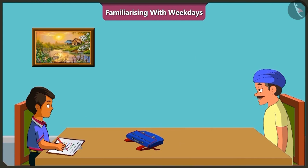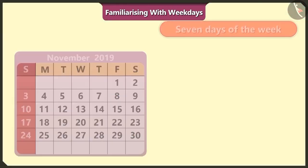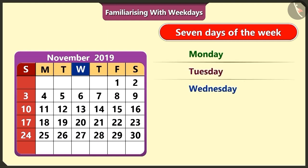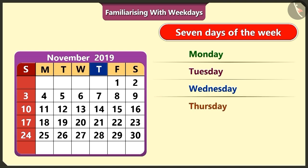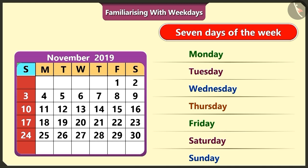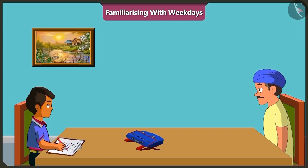Hey Chotu, what happened? Uncle, you told me about the seven days of the week: Monday, Tuesday, Wednesday, Thursday, Friday, Saturday and Sunday. But today, my teacher said that there will be a drawing period tomorrow and we should bring a color box. But what day of the week is tomorrow? I don't understand.